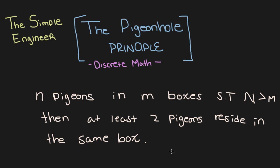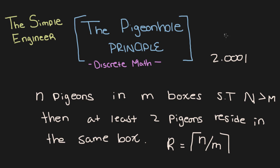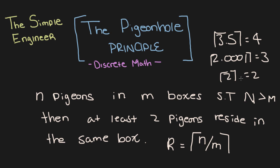This follows the formula: the desired outcome r equals the ceiling function of n pigeons over m boxes. The ceiling function rounds up — for example, the ceiling of 3.5 equals 4, and the ceiling of 2.0001 equals 3. However, the ceiling of exactly 2 equals 2, since there is no number slightly higher.